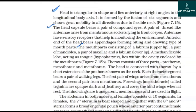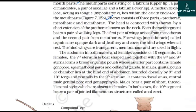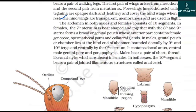The thorax consists of three parts: prothorax, mesothorax, and metathorax. The head is connected to the thorax by a short extension of the prothorax known as the neck. Each thoracic segment bears a pair of walking legs. The first pair of wings arises from the mesothorax and the second pair from the metathorax. The forewings from the mesothorax are called tegmina — opaque, dark, and leathery, covering the hind wings when at rest. The hind wings are transparent and membranous, used in flight.